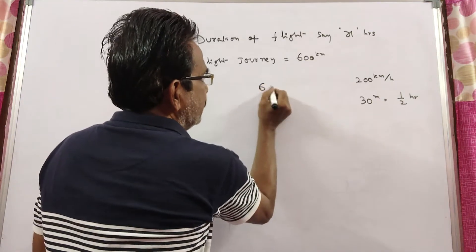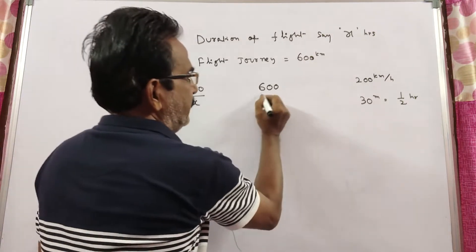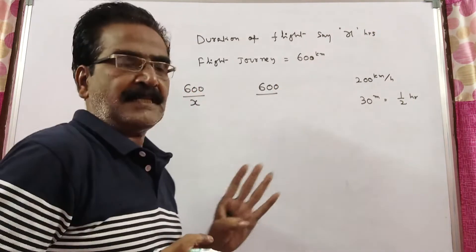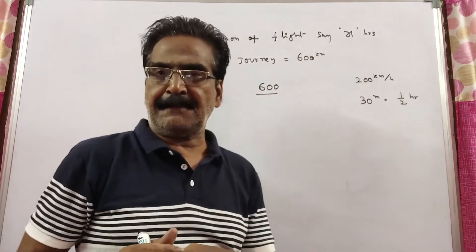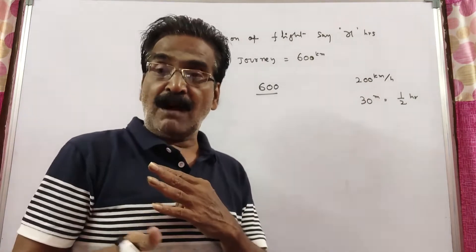The present speed, that is after reduction of the speed, equals distance divided by - see, after reducing 200 kmph, it took half an hour more.